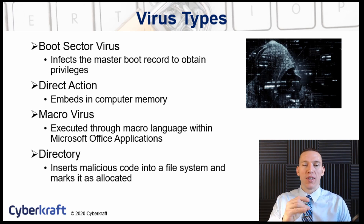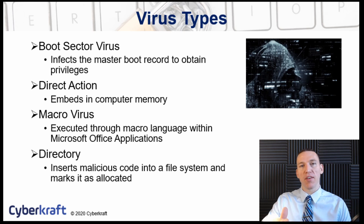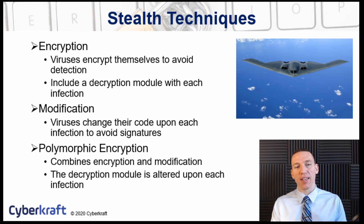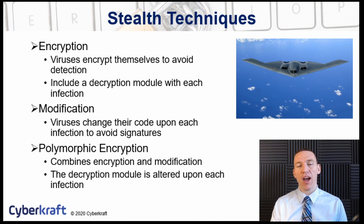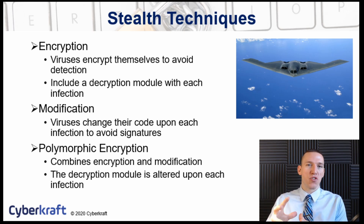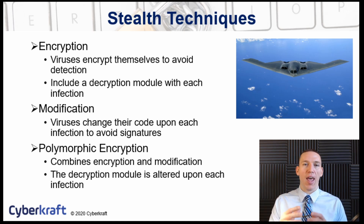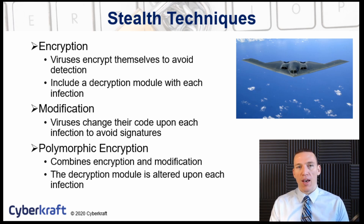A directory virus codes itself into a file system and marks that segment as allocated, so that when scans are conducted on memory, the virus remains hidden. Viruses can also encrypt themselves and all the files involved, hiding from antivirus software that wouldn't have the permissions to decrypt those files. The virus includes a decryption module, giving it the ability to encrypt itself and, when it replicates, encrypt other portions of memory.